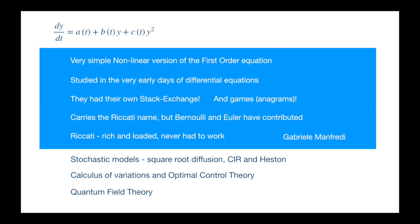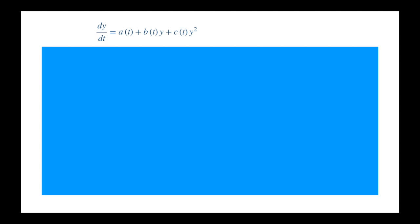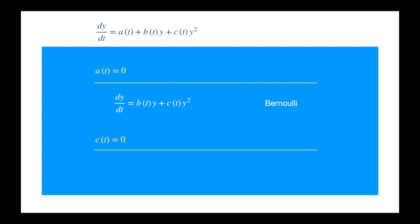Now just to understand the equation slightly better, let's see how it compares with other equations. If the coefficient a is 0, then this becomes the Bernoulli equation, which is nonlinear but can be easily linearized. We shall encounter this linearization process later on in this video. And if the coefficient c is 0, then it's just the first order linear equation. If you add the cubic term, then this becomes Abel's equation of first kind. So you can see Riccati got its segmentation right — any other form in hashtag Riccati wouldn't have stood a chance.